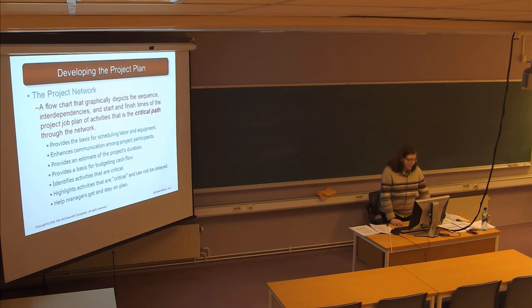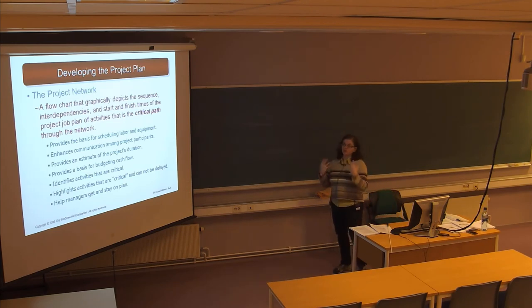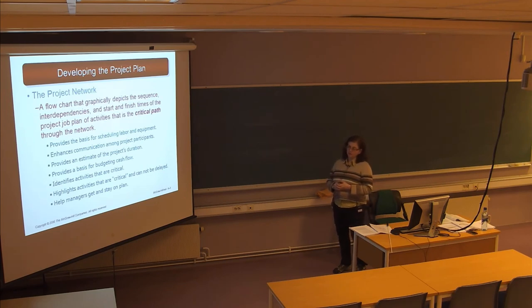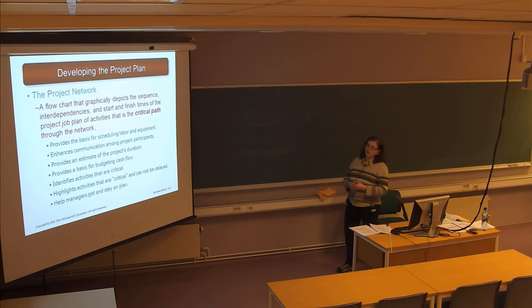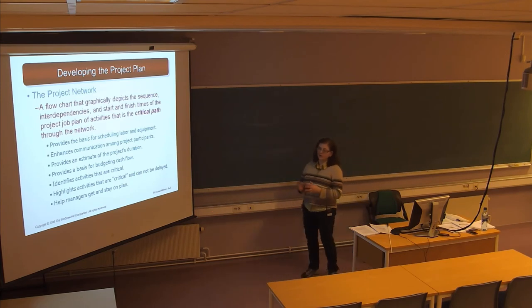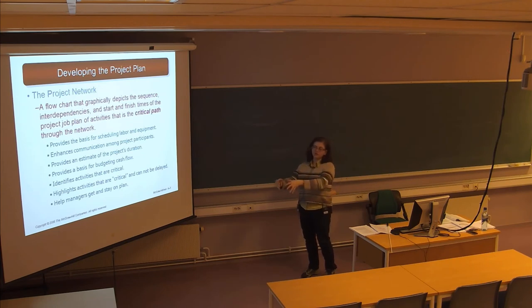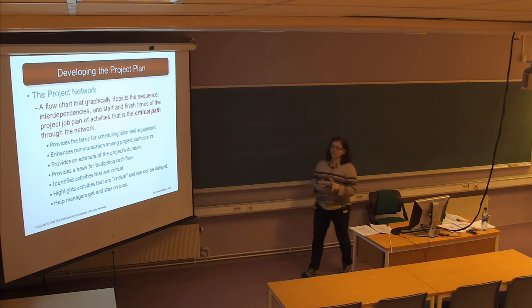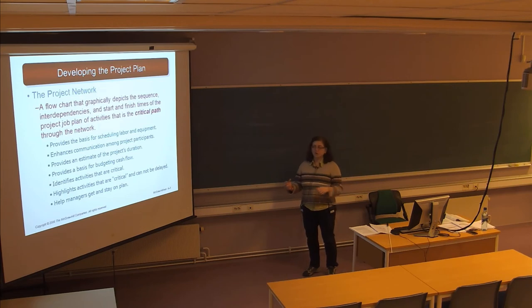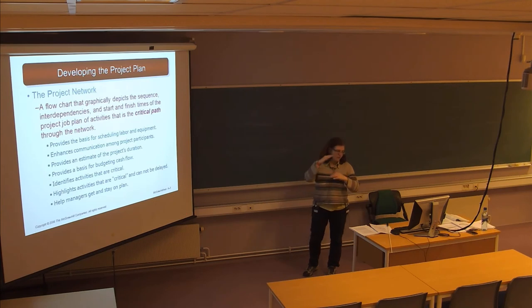What we are going to talk about today is the project network. This is basically a flow chart that shows the interdependencies of the activities that have to be done in the project. It's very important because it helps the project manager understand what the critical path is through the activities. Once you get one activity done, you're clear to start the next activity. There's a chain of activities that have to happen — sometimes this chain is serial, one at a time, but some events can be happening in parallel.